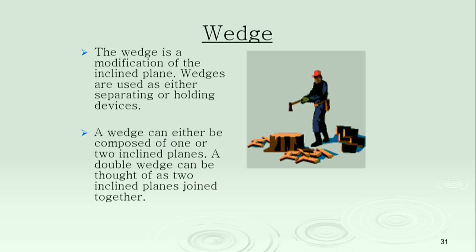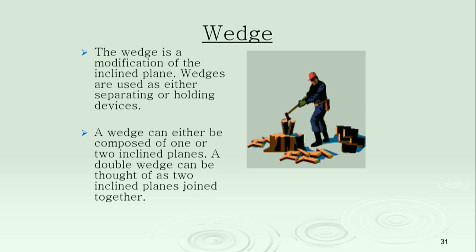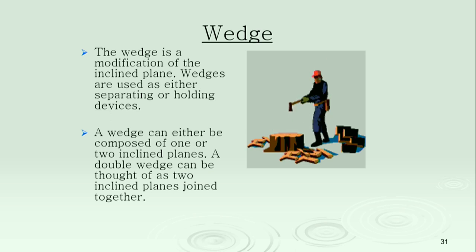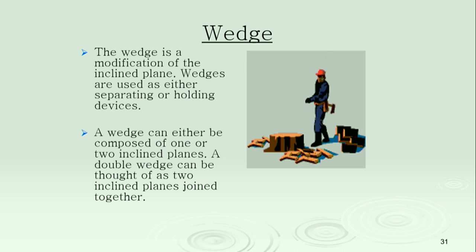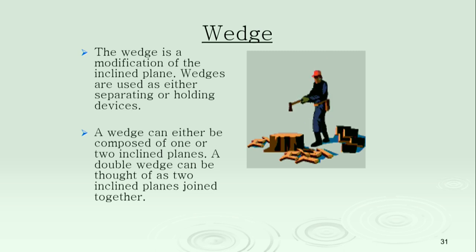A wedge is a modified incline plane used to separate things or hold things. If you've ever seen a little wedge in a door holding it open — there's a simple machine at work. If you've ever seen an axe split wood, that wedge on that wooden stick is a simple machine. Try doing that by hand and tell me if you have any luck.